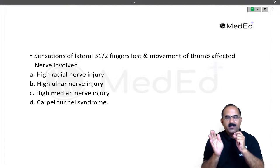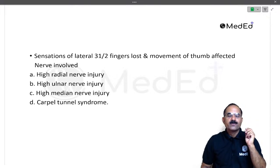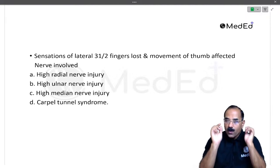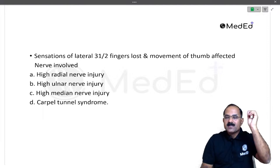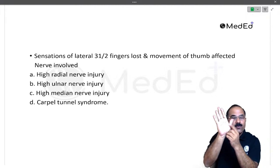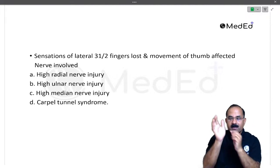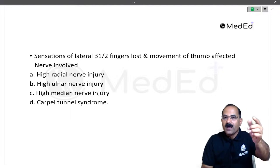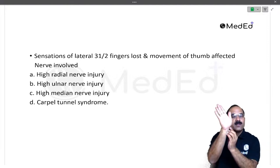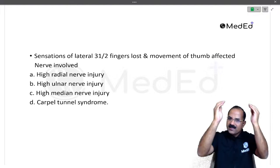Abductor pollicis brevis is supplied by the median nerve. Flexor pollicis brevis has two heads — the superficial head supplied by the median nerve and the deep head supplied by the ulnar nerve. Opponens pollicis is also supplied by the median nerve. But flexor pollicis longus, being a forearm muscle, is supplied by the anterior interosseous nerve. If the question had specified that the skin over the thenar eminence is intact, then it would be carpal tunnel syndrome. Since that was not specified, it is a high lesion of the median nerve — meaning the palmar cutaneous branch of the median nerve, which passes over the flexor retinaculum and supplies the skin over the thenar eminence, is also affected.